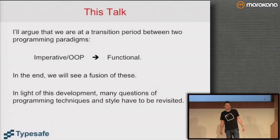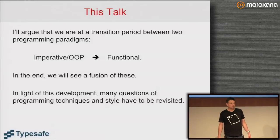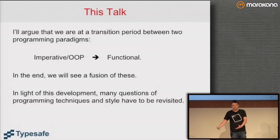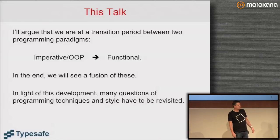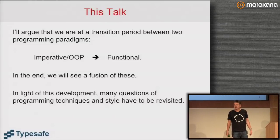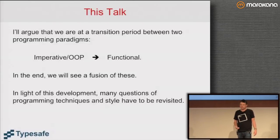To give you a little perspective, in this talk I'll argue that we are in a transition period between two programming paradigms: imperative, object-oriented programming — that's what we've used so far — and I think we are transitioning to more and more functional. In the end I believe it won't be a complete replacement, but we'll see a fusion of these. In this period of upheaval there are many questions of programming techniques and style that have to be revisited.